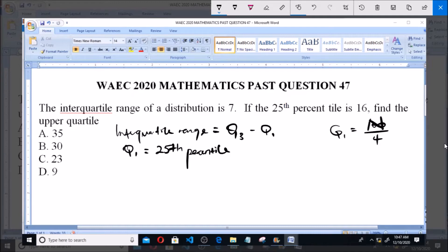Then 25th percentile represents 25 over 100 multiplied by n, that's n all over... sorry, 25 over 100 multiplied by n. That's the 25th percentile and that equals n/4 because 25/100 is 1/4, and that will still give you n/4. So you can see that Q1 is equivalent to the 25th percentile.